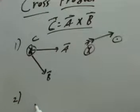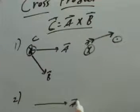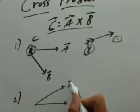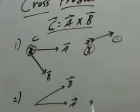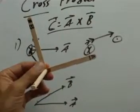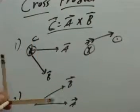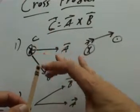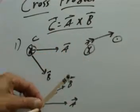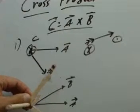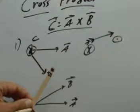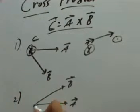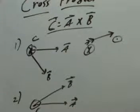A very similar problem: suppose A is over here pointing to the right, and suppose B is pointing straight up. Where would C be now? I get my model out, point A in the direction of the first vector, and if I imagine B closing this angle a bit, I can get them pointing in a direction like that. In either case, I see C pointing straight up. So the answer to this is straight up.